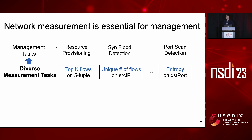Network measurement plays an essential role for managing networks. For example, to better provision network resources efficiently, some measurement data must be provided, such as which top-k flows on five-tuples use the most bandwidth on network links. Other measurement tasks can involve protecting against security threats to detect SYN flood attacks or port scan attacks. It is critical to measure the number of unique flows on source IP or entropy estimation on destination port. As you can see, it is critical to run diverse measurement tasks to make right management decisions on the network.